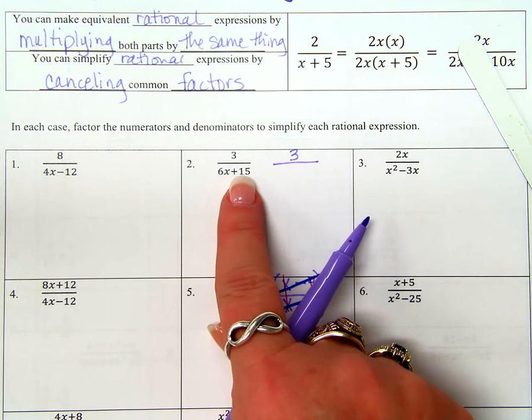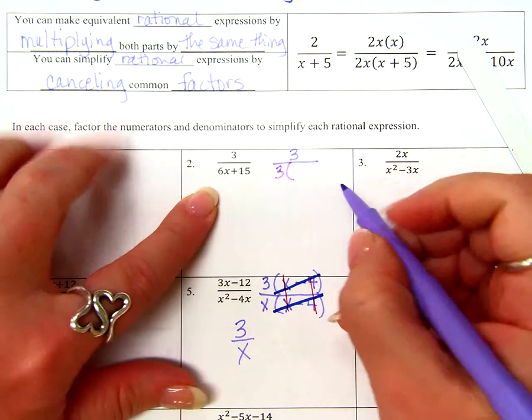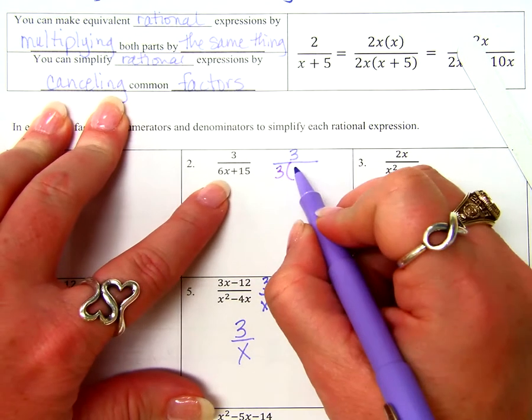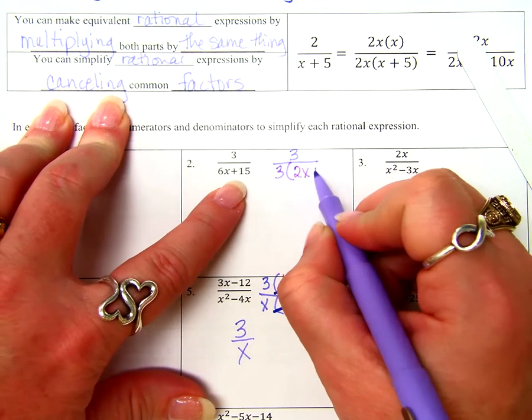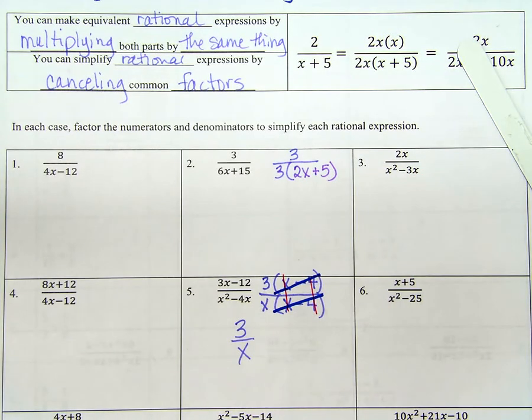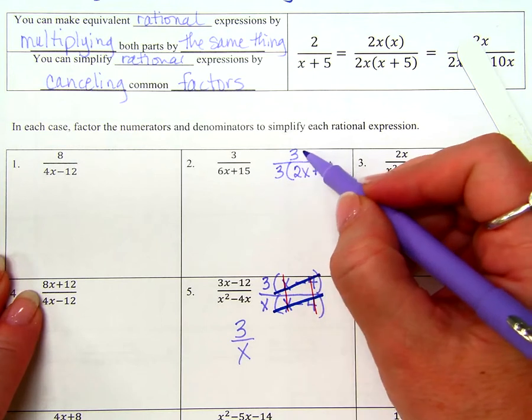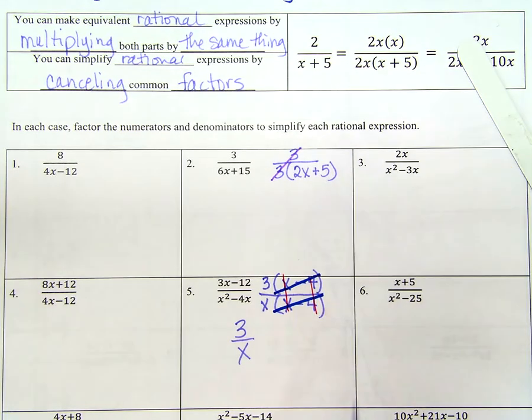3 over X. Choose another one. Oh, that we can see. One of these. Two. Okay? So if we're going to look at two, what do we need to do first? Factor. Okay, is there anything I can factor in the numerator? No. So I just get 3. Is there anything I can factor in the denominator?